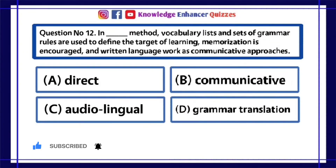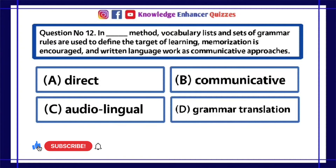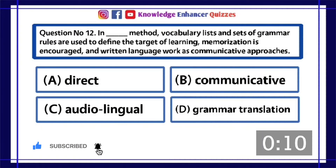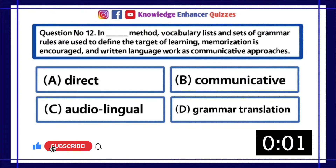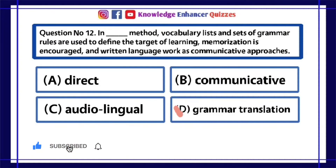Question Number 12: In dash method, vocabulary lists and sets of grammar rules are used to define the target of learning, memorization is encouraged, and written language work is prioritized. A. Direct, B. Communicative, C. Audiolingual, D. Grammar Translation. Option D is the right answer.